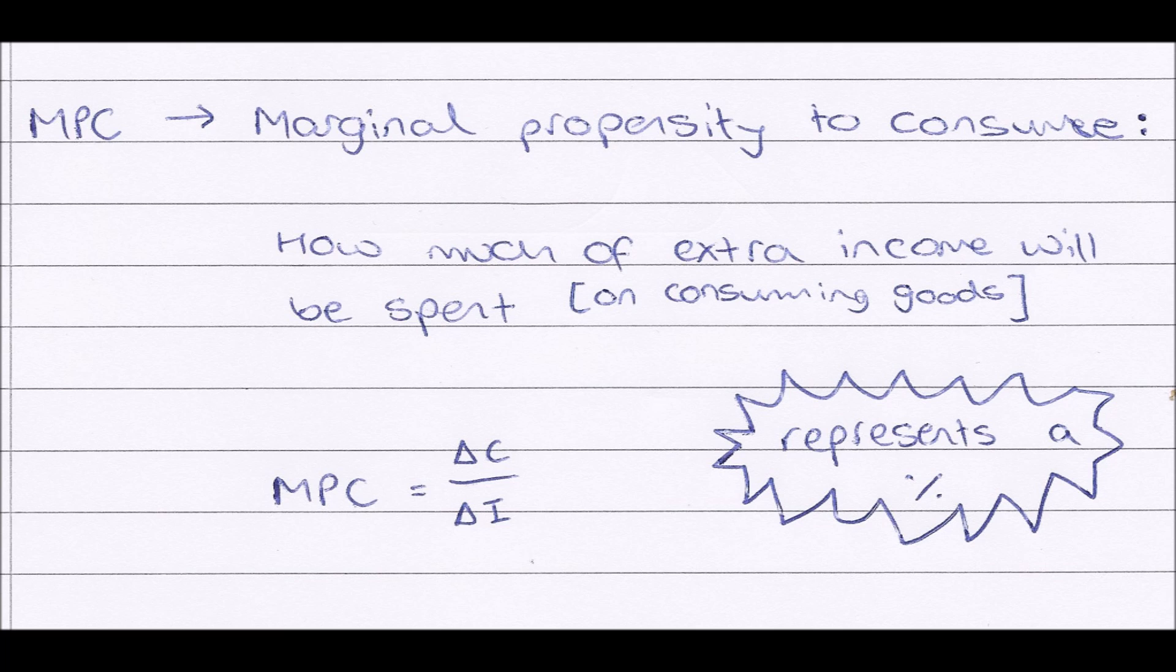divided by our change in income, so how much extra income we're getting. This again represents a percentage number, so if this time it was 0.85, this represents that 85% of our extra income is being spent on consuming goods.